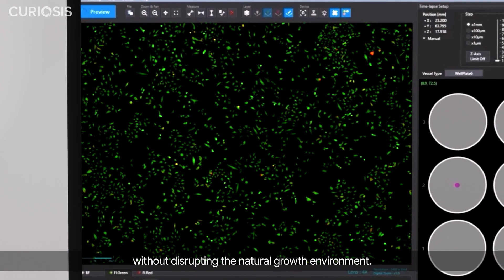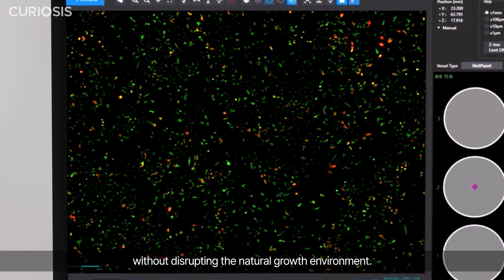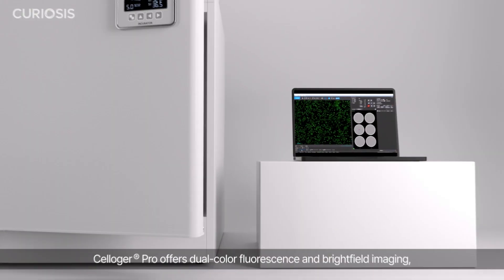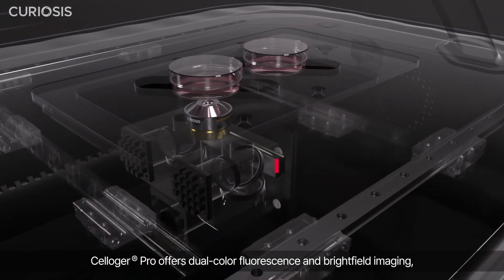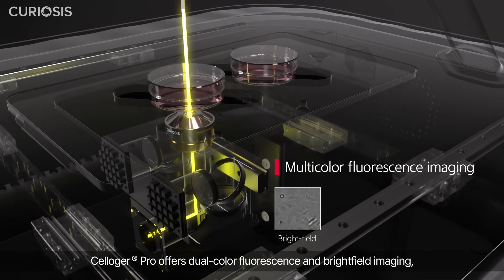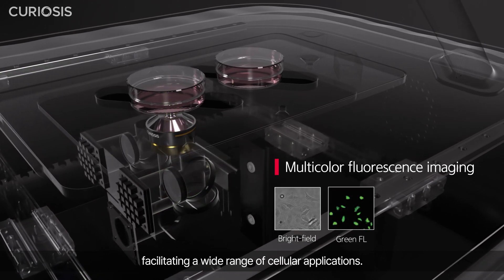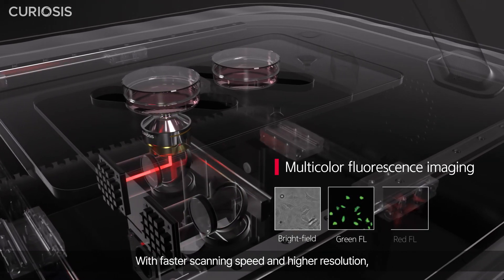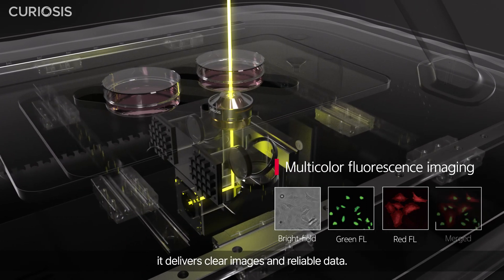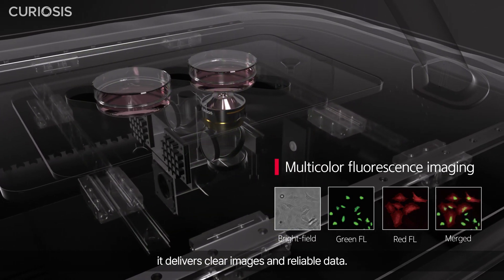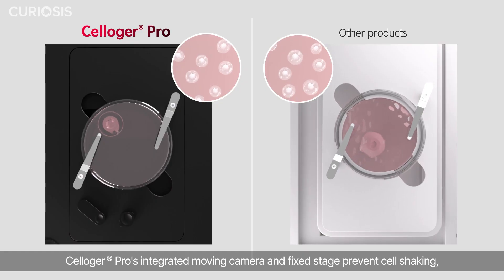Cell Ogre Pro offers dual color fluorescence and bright field imaging, facilitating a wide range of cellular applications. With faster scanning speed and higher resolution, it delivers clear images and reliable data.